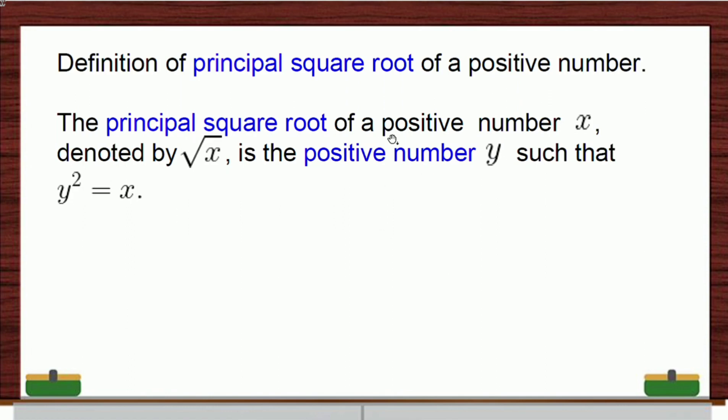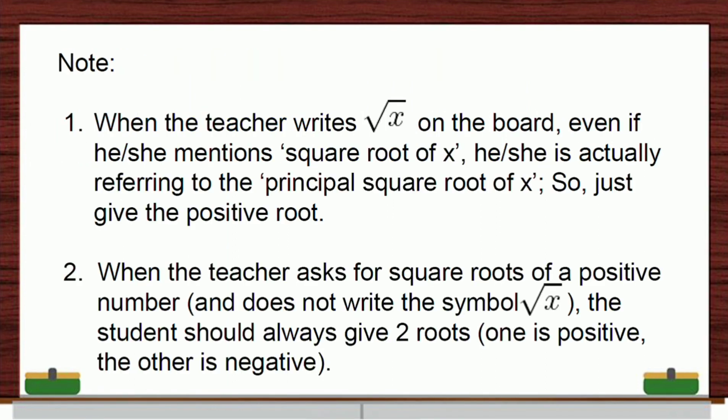So, what's the definition of this principal square root of a positive number? It says here, the principal square root of a given positive number, say x, is denoted by this symbol. Sometimes we call it as the radical of x. But most of us call this, when we write it on board, square root. But actually, it's the principal square root. And the principal square root of a positive number x is a positive number y, such that y squared is equal to x. So, this symbol represents principal square root of a number. So, please take note of this. When the teacher writes this symbol on the board, even if he or she mentions square root of x, he or she is actually referring to the principal square root of x.